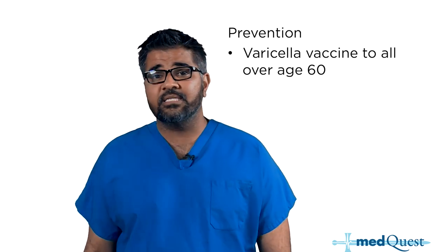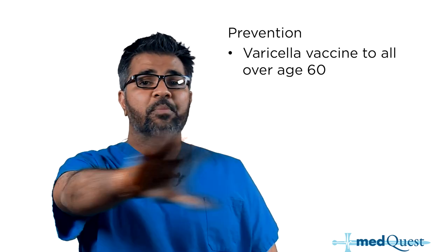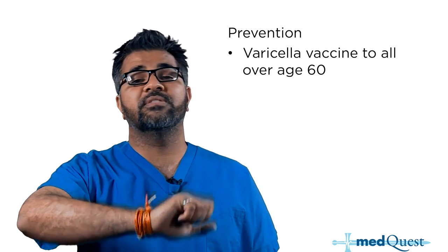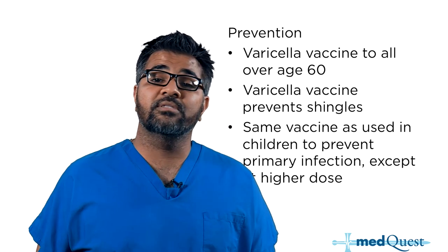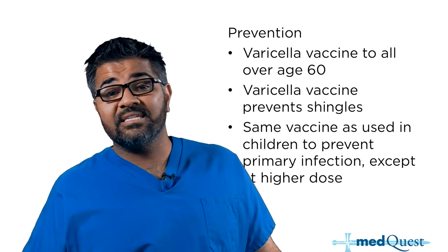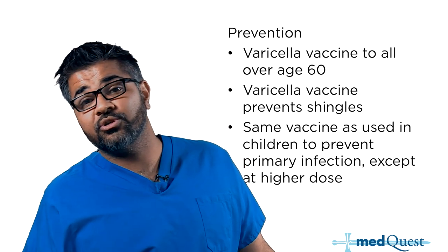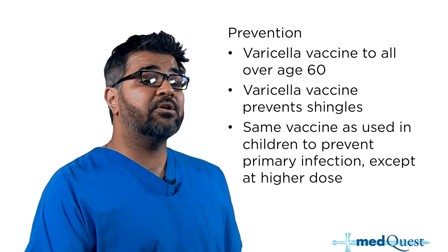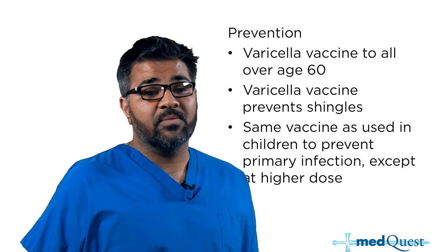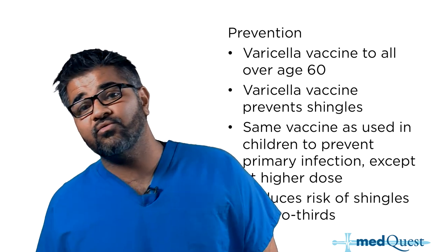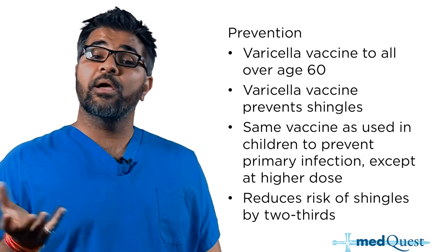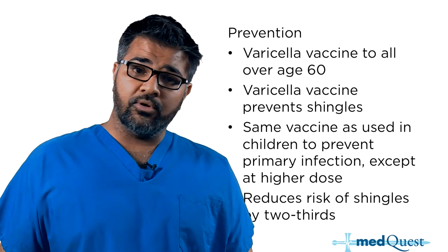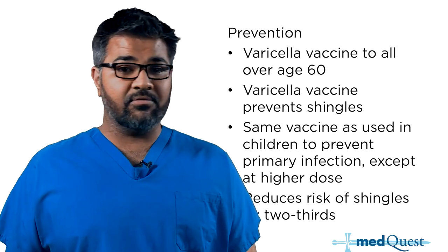Prevention: all patients over age 60 receive the varicella vaccine to prevent shingles. It is the same vaccine used in children, except at a higher dose for adults, and it reduces the risk of developing shingles by almost two-thirds — so it is definitely something to be done.